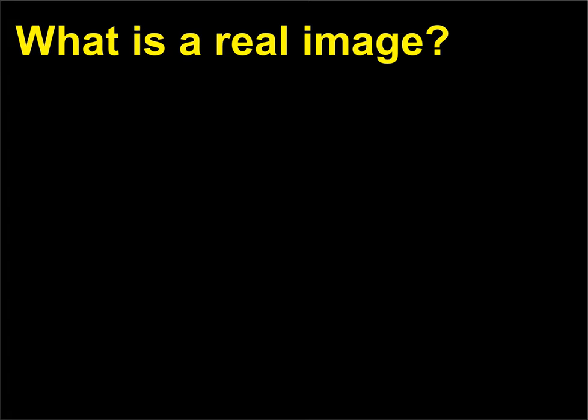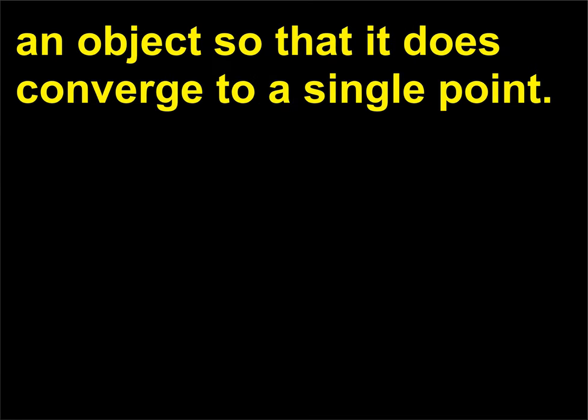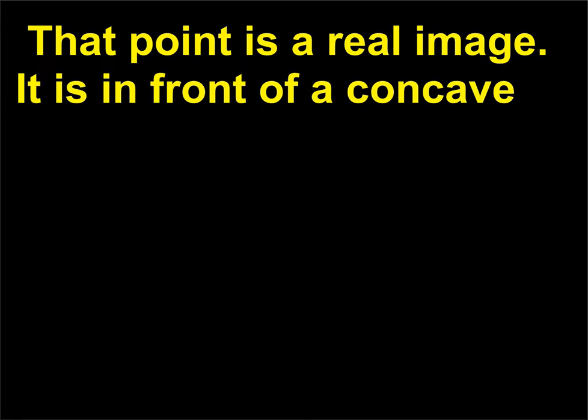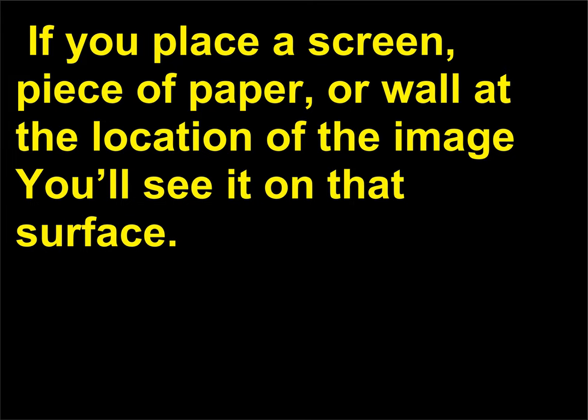What is a real image? A concave mirror or a convex lens can redirect light from an object so that it does converge to a single point. That point is a real image. It is in front of a concave mirror and on the other side of a convex lens from the object. If you place a screen, piece of paper, or wall at the location of the image you'll see it on that surface.